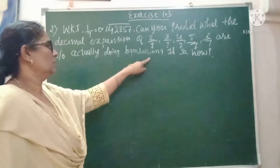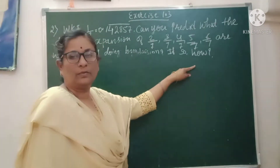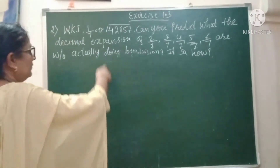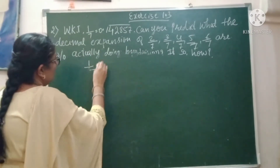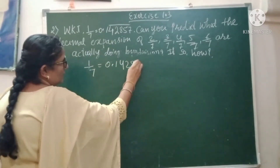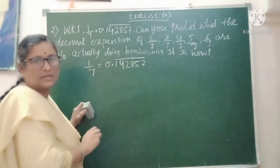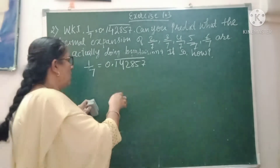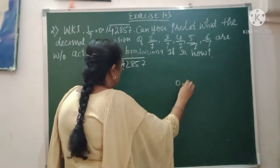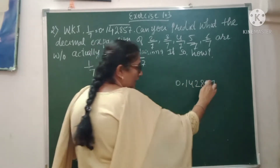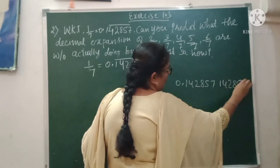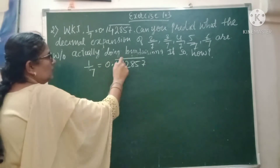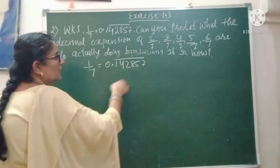They are asking you to find the result without actual long division. Now, 1/7 is given as 0.142857 with a bar over it. That bar has a specific meaning — it is not written randomly. It means the digits 142857 are repeating. When you divide 1 by 7, you get 142857 and then 142857 again, continuously. So the bar indicates those digits repeat from start to end.